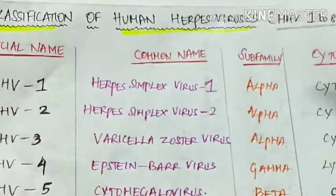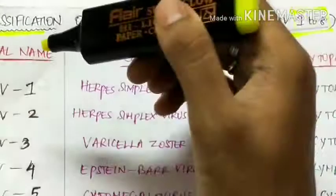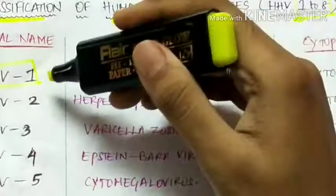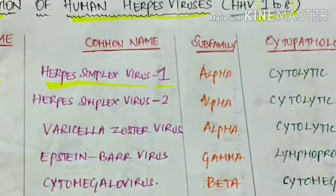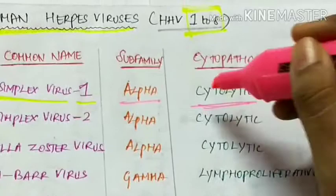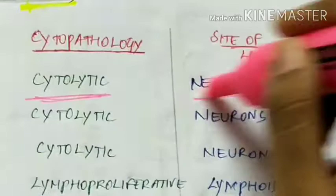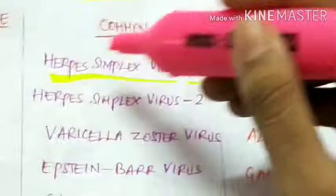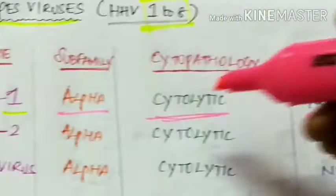Looking at the broader classification of human herpes viruses type 1 to 8: Human herpes virus 1, commonly known as herpes simplex virus 1, belongs to subfamily alpha. Its cytopathology is cytolytic — it causes lysis of cells — and the site of latent infection is neurons.